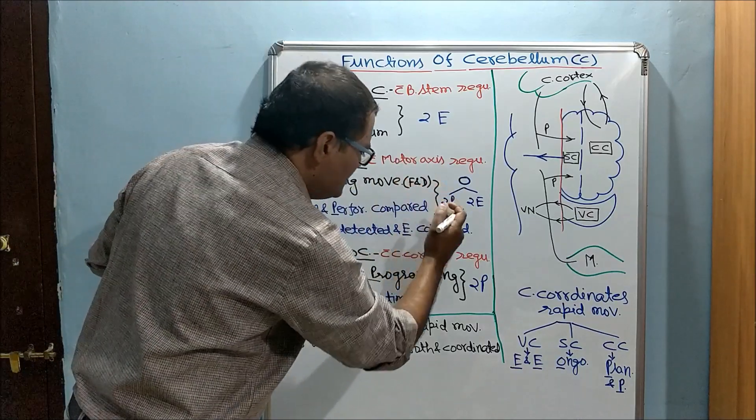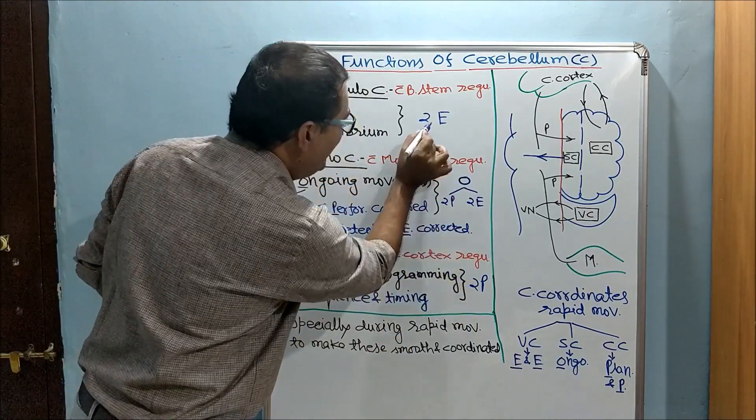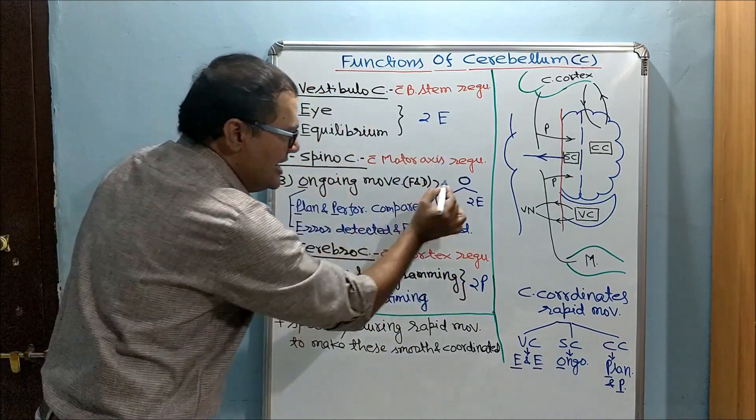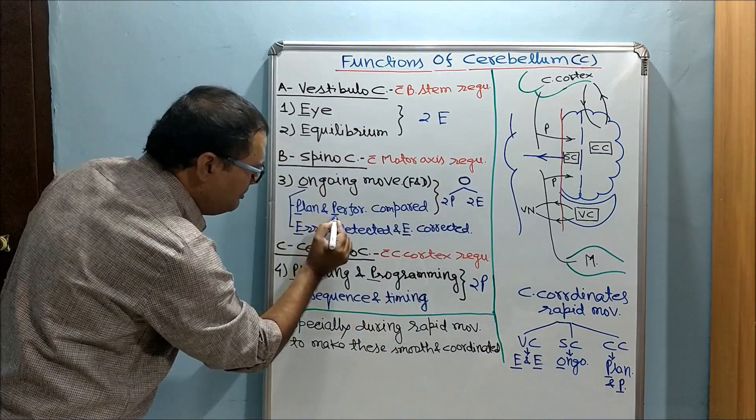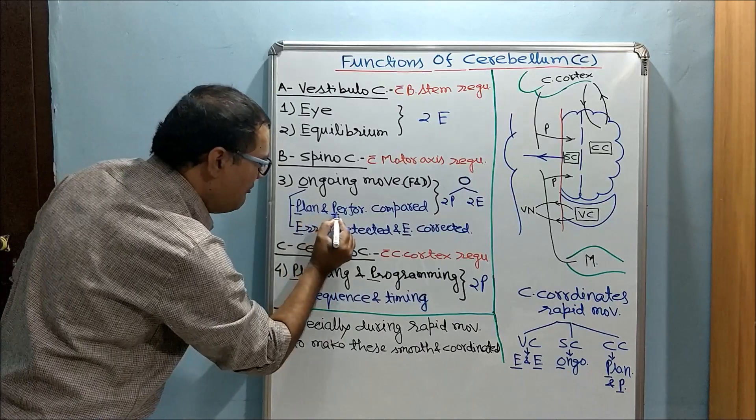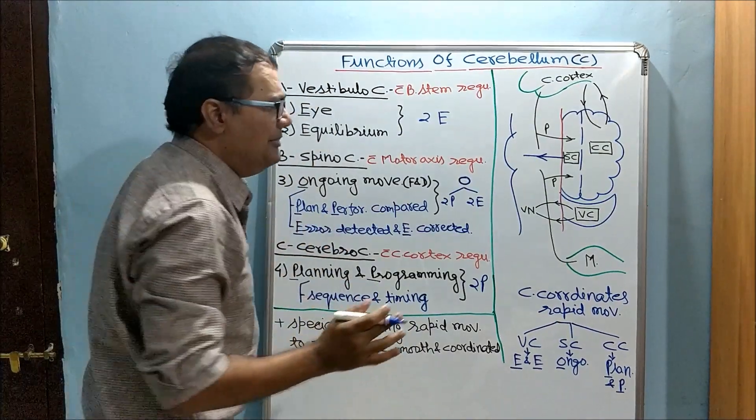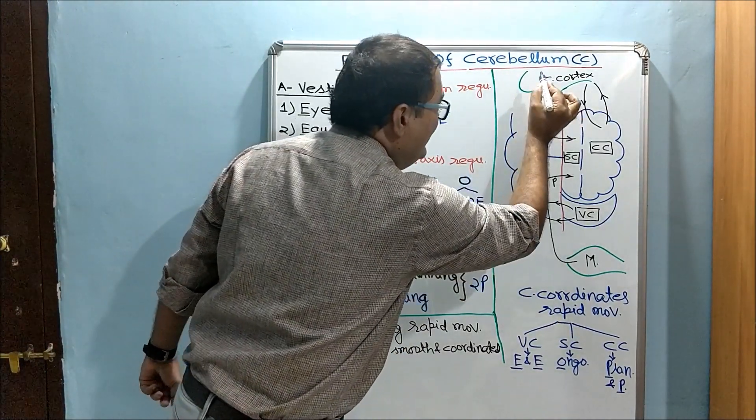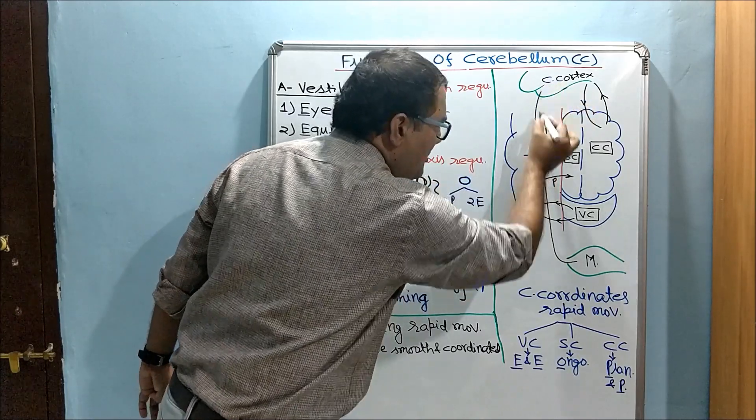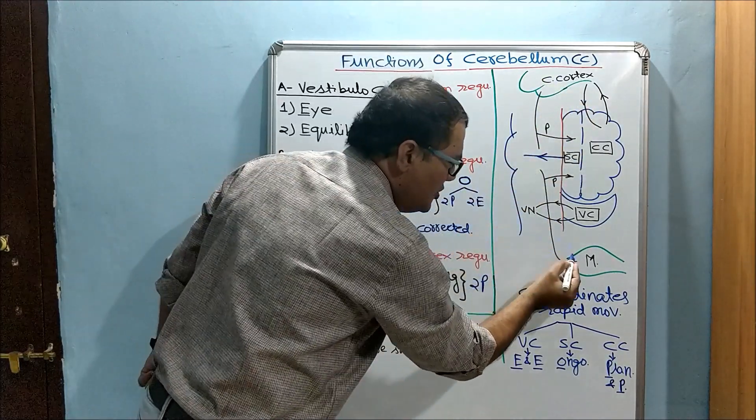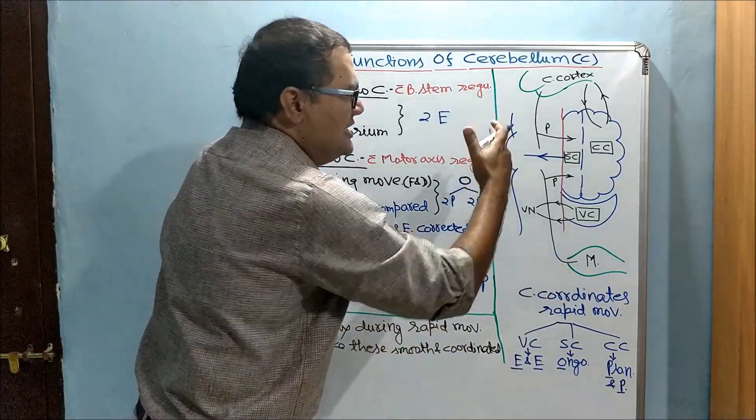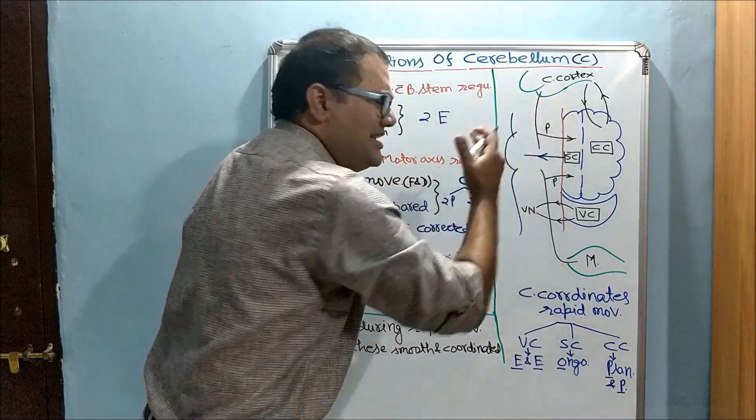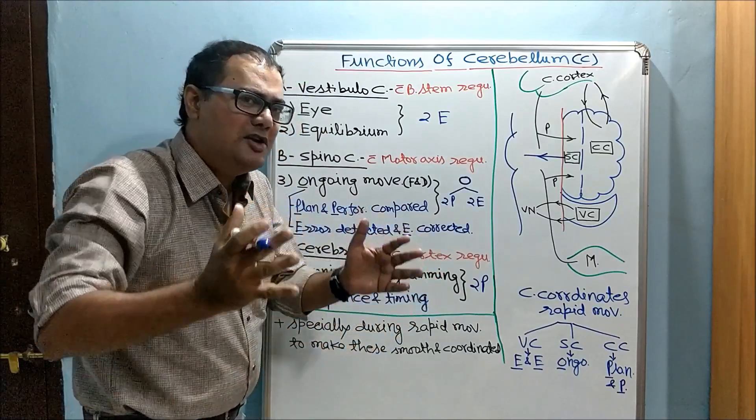How we do it? To understand, let's take two P from here and two E from here. Spinocerebellum is comparing motor plan with performance - plan with performance, two P's. So spinocerebellum is getting copy of intended motor plan from cerebral cortex, and it is also getting information from muscle regarding motor performance. The plan's copy comes from cortex, and at the muscle level, what is actually happening...